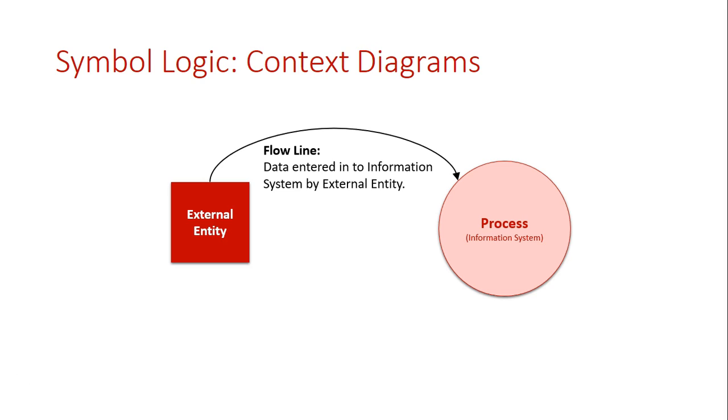Then, we also need to see the output from the system, which is information. Obviously, there would be information flowing back to the external entity. Once again, with the flowline arrow, you write what data is coming out of the system.